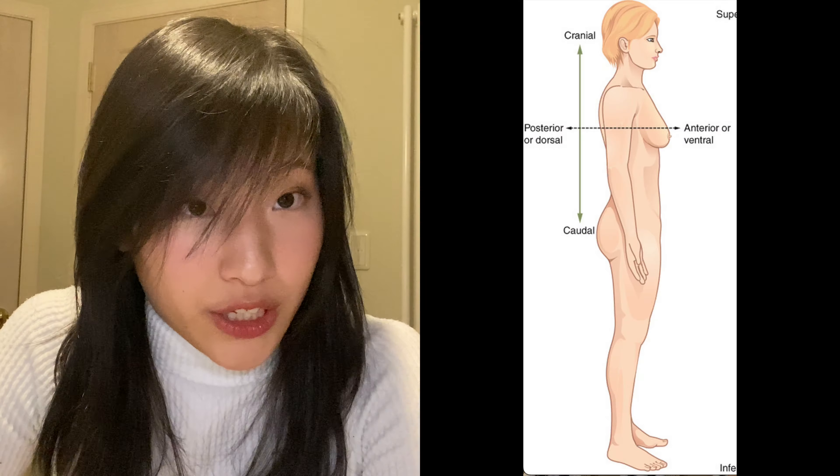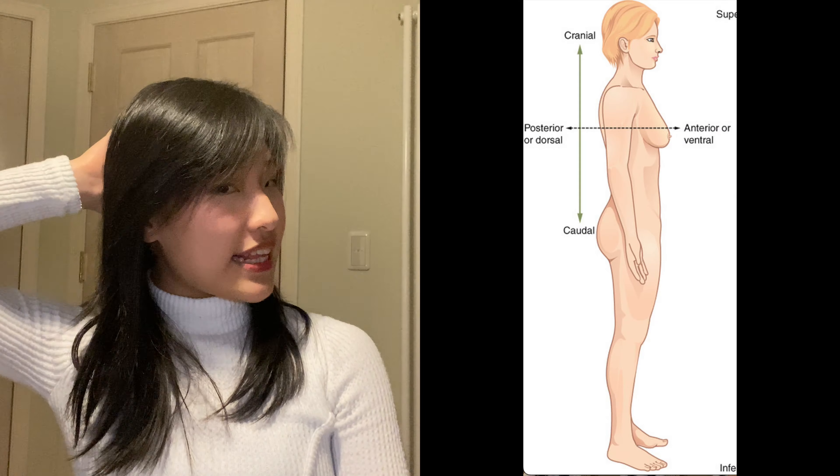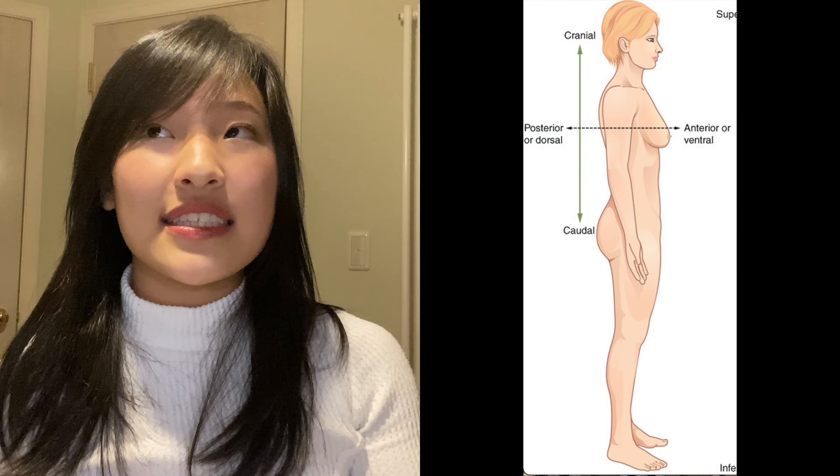Now let's talk about cranial, which is at the top of the head. To remember it, think of the crown, because you would put your crown on your head — so that's cranial. The opposite of cranial would be the rear end, which is called caudal. If you've watched the fish dissection video, the caudal fin is also right above the rear end of the fish, so caudal makes sense.